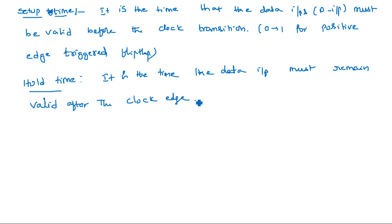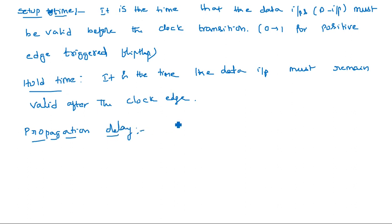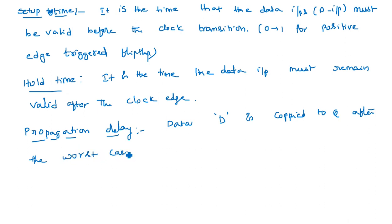These are the timing metrics for the sequential logic circuit. Now let us see the parameters related to time for registers. Propagation delay is an important parameter: data D is copied to Q after the worst-case propagation delay, denoted tp.